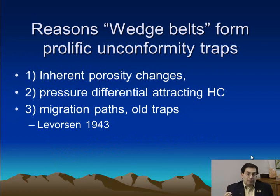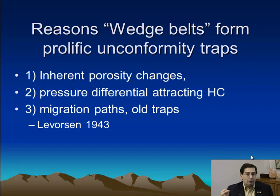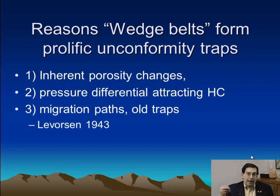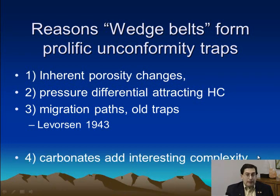The early workers — Leverson's 1943 paper — recognized that clastic systems had inherent porosity changes at unconformities, that there were pressure differentials that could attract and affect the way hydrocarbons migrated, and that paleogeomorphic traps had the opportunity to get many charge pathways and therefore a favored situation. But these were basically observations about siliciclastic systems. The Great American Carbonate Bank is a carbonate that is greatly dissolved, karstified, and fractured by this unconformity, adding an entire new dimension.